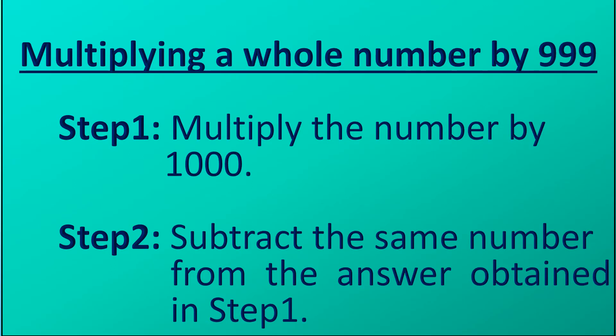Now we will see how to multiply a whole number by 999. Step 1: multiply the number by 1000. Step 2: subtract the same number from the answer obtained in step 1. Hope this trick is easy.